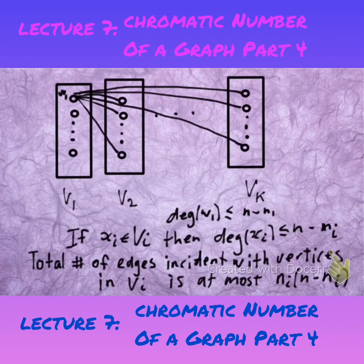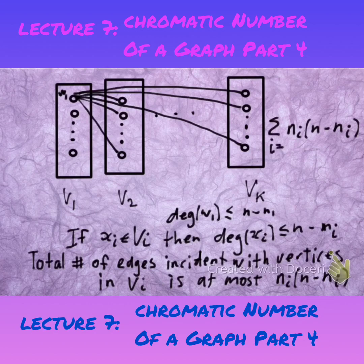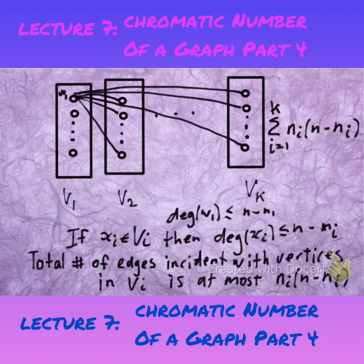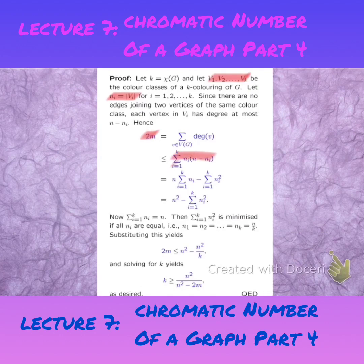If we add this all up and work out the maximum total number of edges, we need to sum over all the NI's. By summing over the degree sequences of vertices, at the very worst you are counting an edge twice, because an edge is incident with two vertices. Therefore, twice the number of edges is at most this sum here. And you can simplify that.